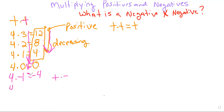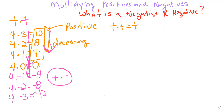Let's keep going. Four times negative two — continuing to decrease — brings us to negative eight. And four times negative three brings us to negative 12. So what we've just generated is the idea that if we have a positive times a negative, we're going to end up with a negative. That's our next rule based on the pattern: a positive times a negative equals a negative.